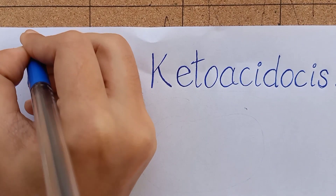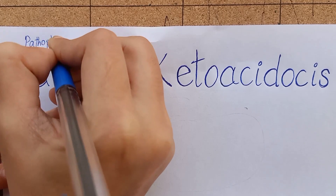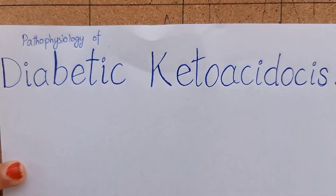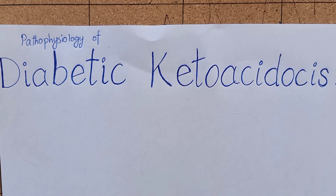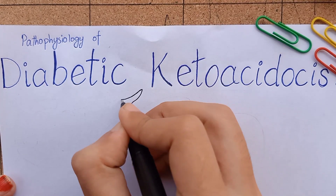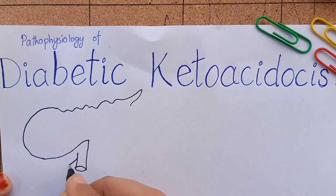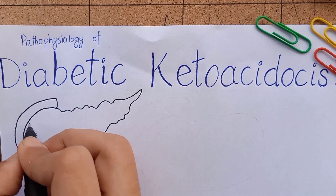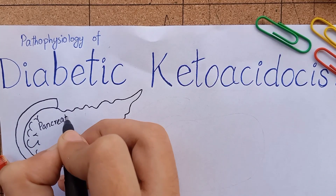Diabetic ketoacidosis is an acute metabolic complication of type 1 diabetes, but can also occur in type 2 diabetes less commonly. Before getting into detail of diabetic ketoacidosis, let me give you a short review of the mechanism of action of insulin and the pathophysiology of diabetes.